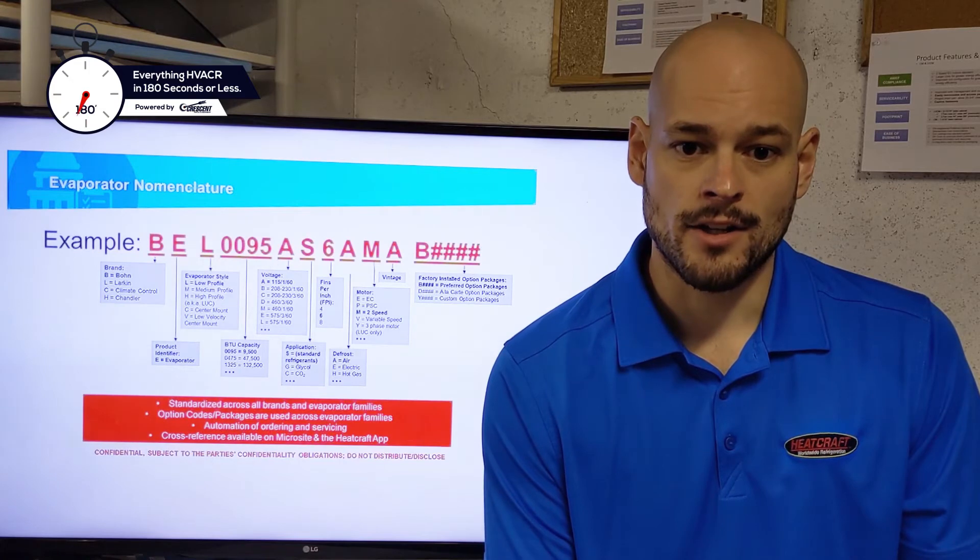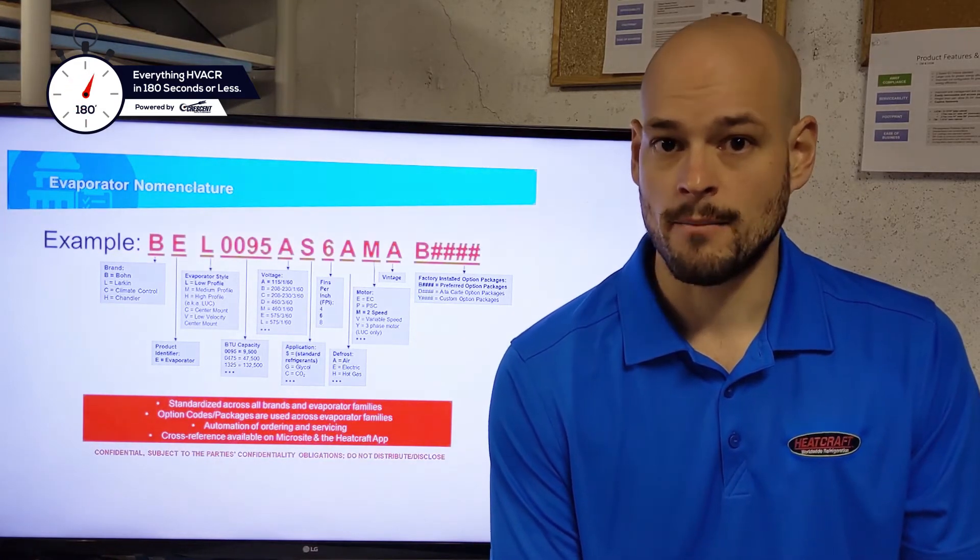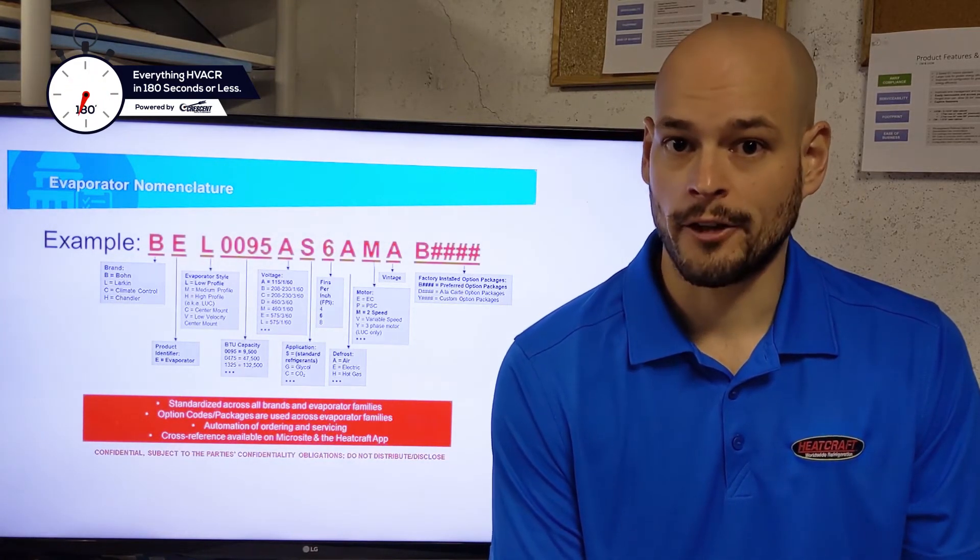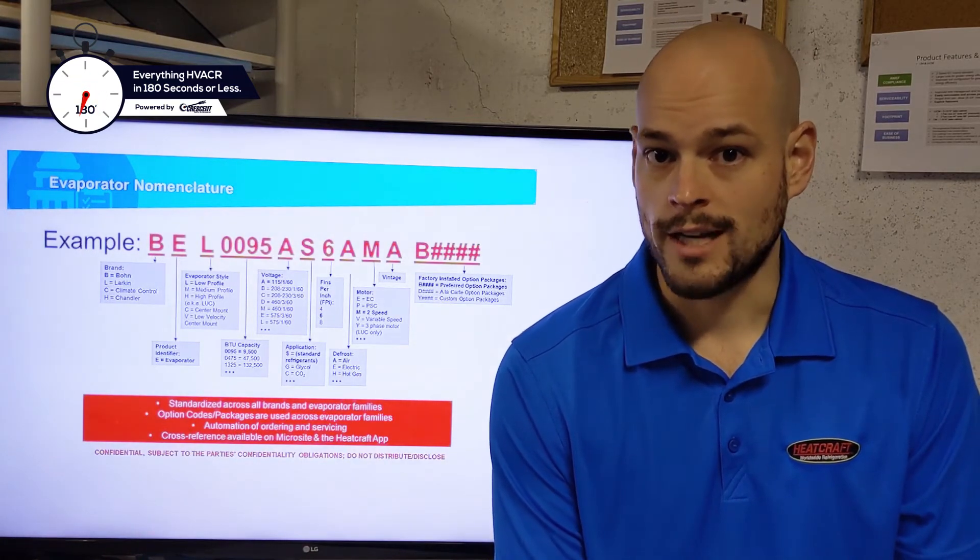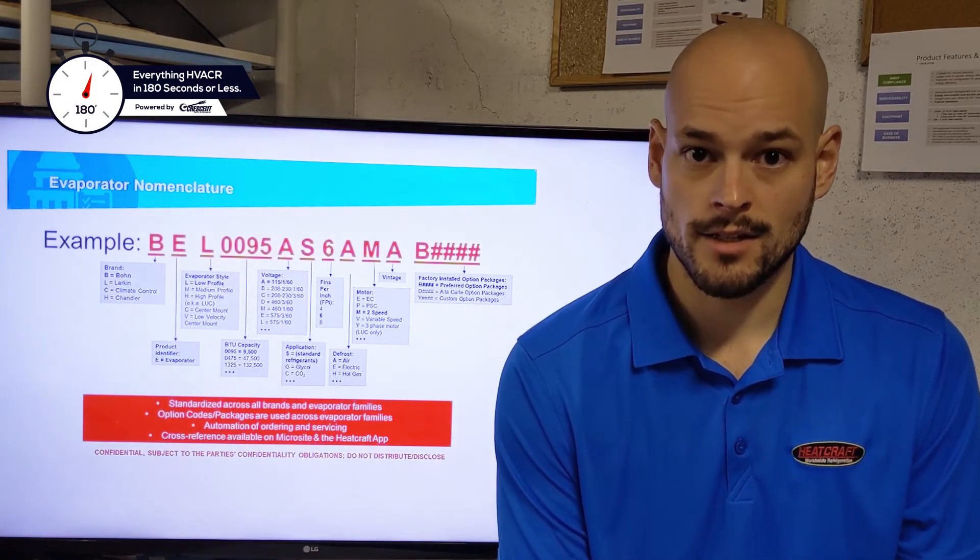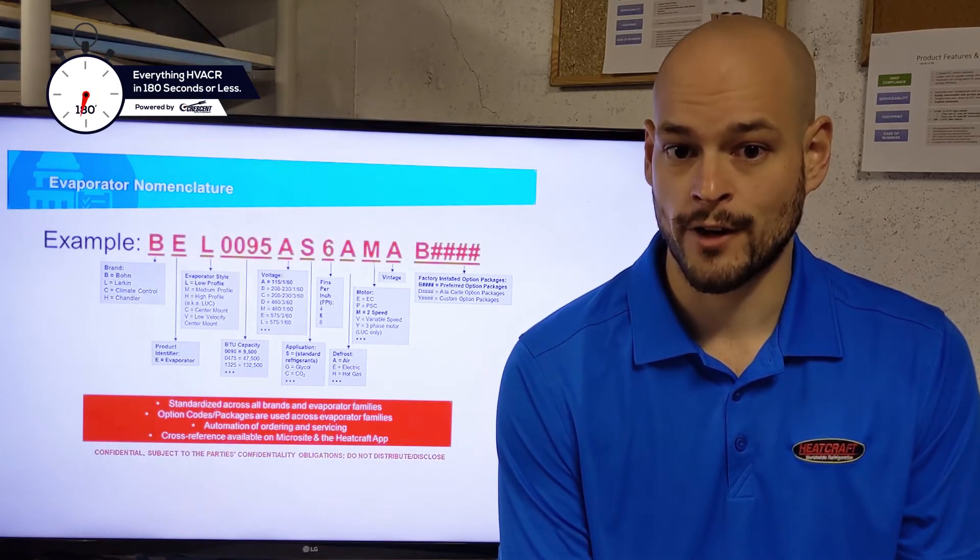Your next indicator is going to be your defrost code. Really simple. It's going to be an A for air, E for electric, or H for hot gas. Your next code is going to be your motor. E for EC, P for PSC, M for two-speed, and V for variable speed.